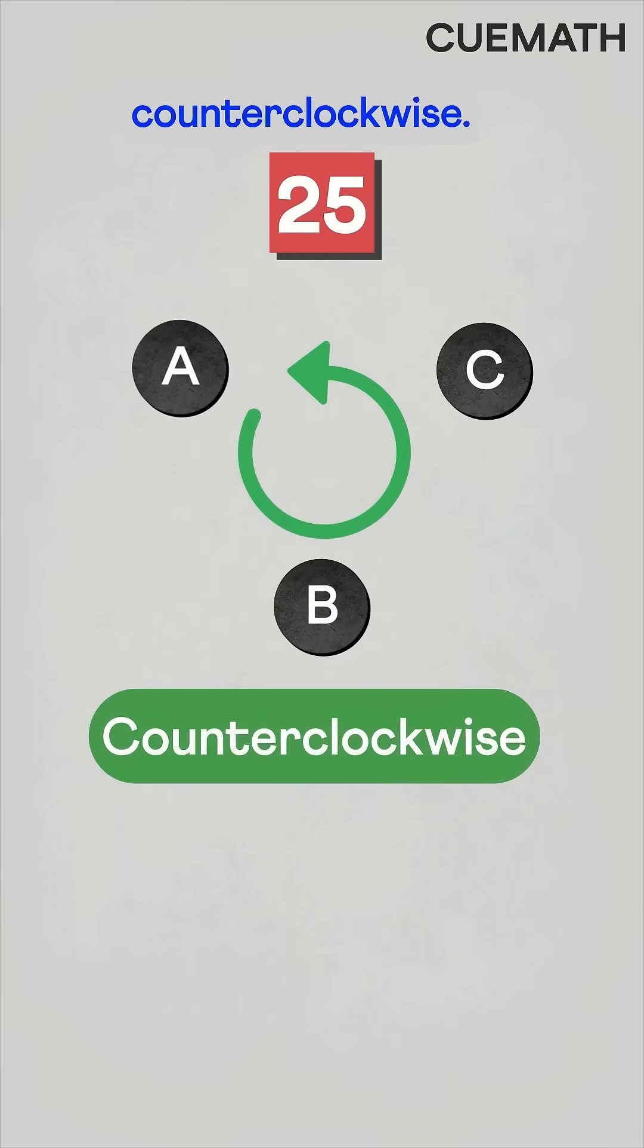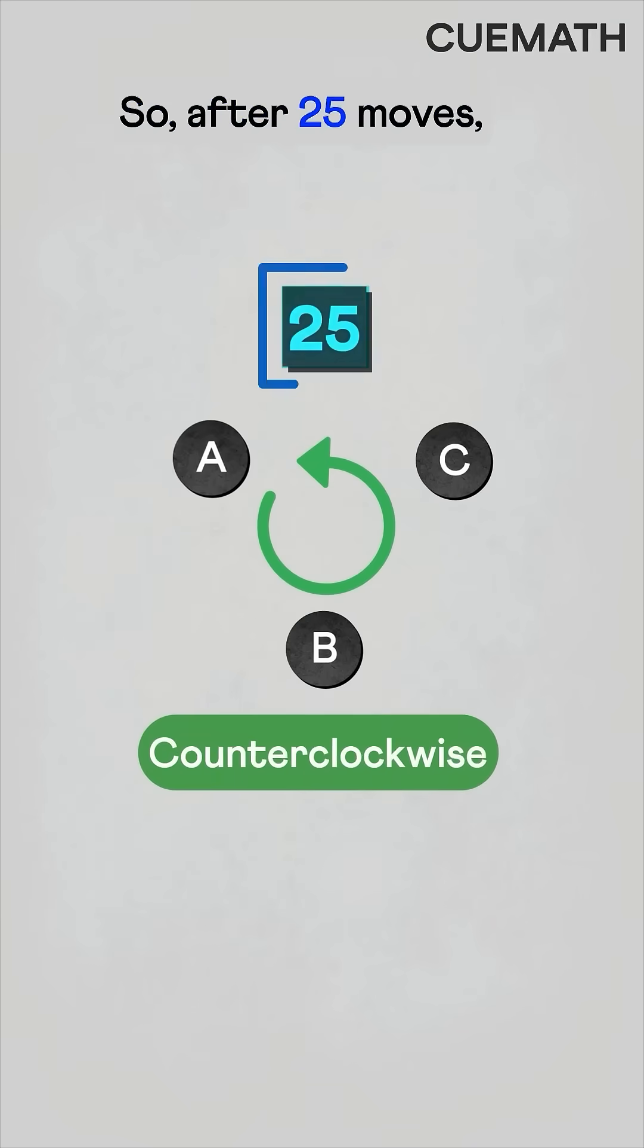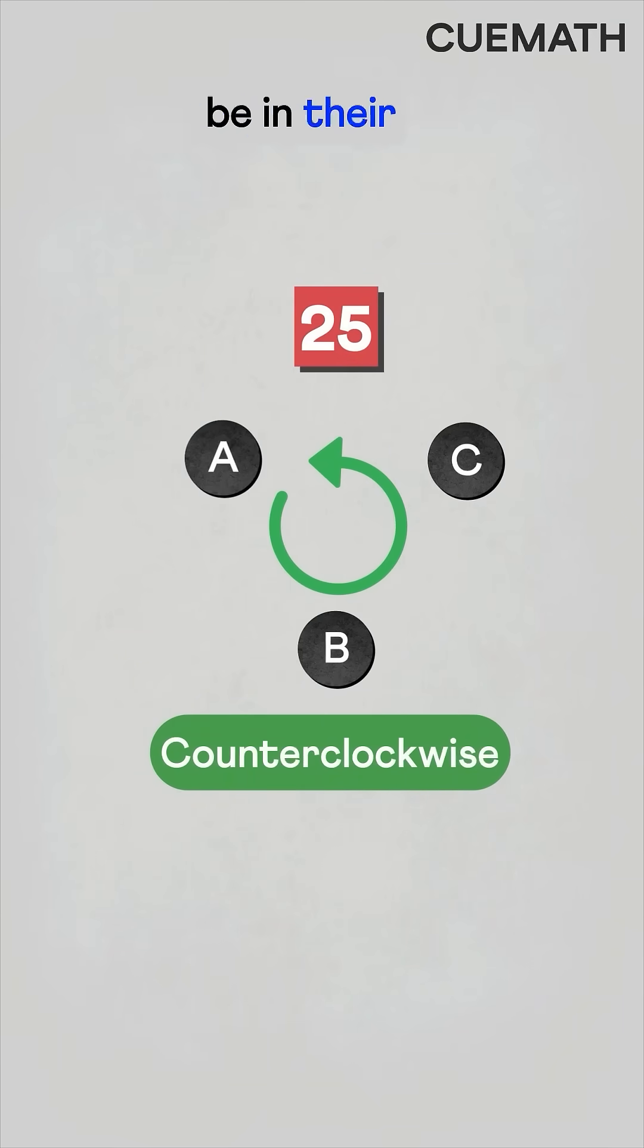Since 25 is an odd number, the final orientation will be counterclockwise. But we started with a clockwise orientation. So after 25 moves, there's no chance the pucks will be in their original positions.